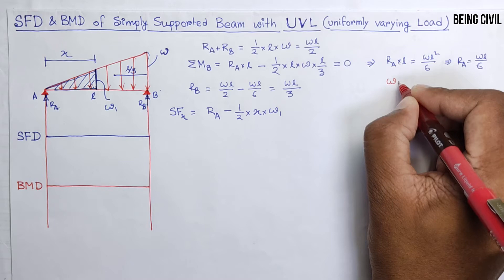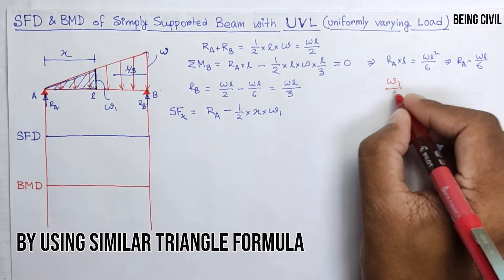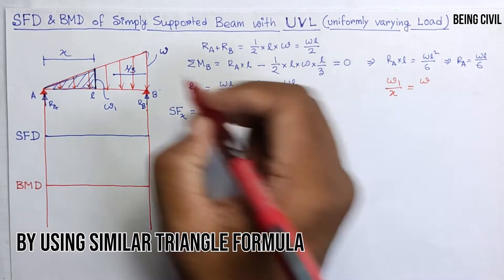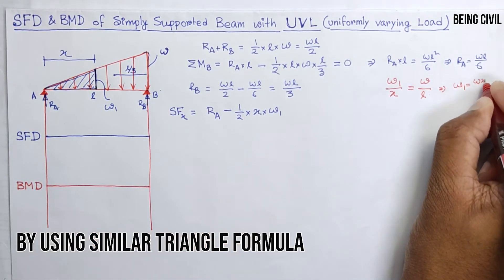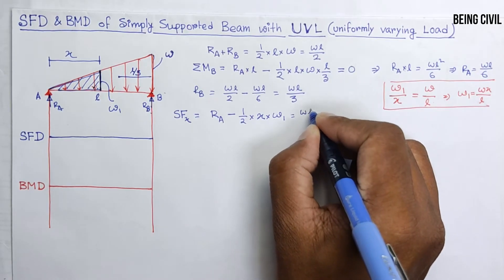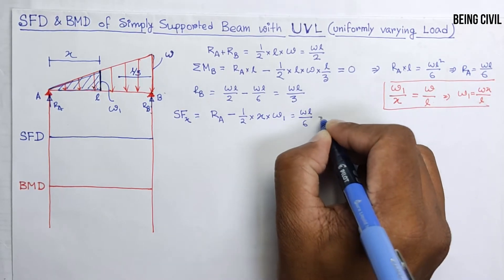And height W1: this height by base, which is X, equals W by base, which is L. So you get W1 equals WX by L. So RA is WL by 6 minus half times X times WX by L, which equals WL by 6 minus WX squared over 2L.